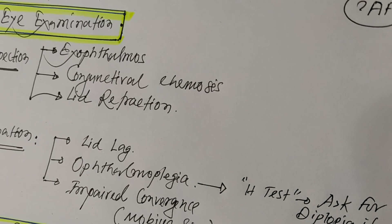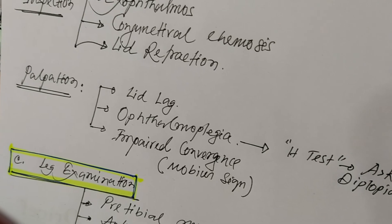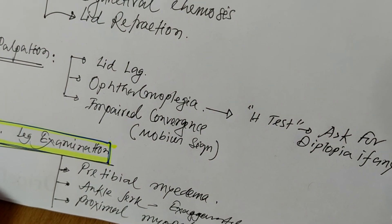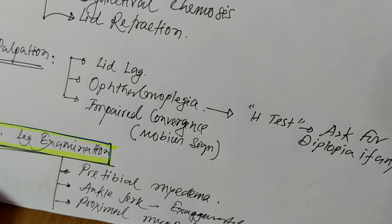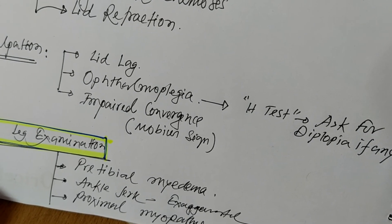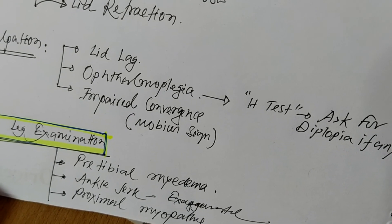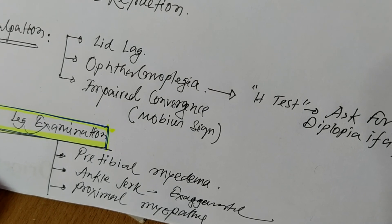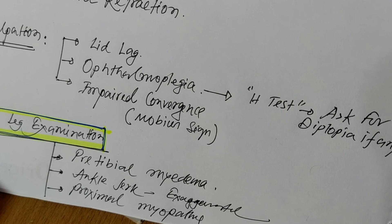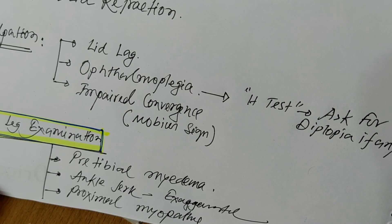The last point of thyroid function status examination is leg examination, which also has three points. First, pretibial myxedema — one of the most important pathognomonic signs for Graves' disease. Second, ankle reflex: in a thyrotoxic state, all deep tendon reflexes are exaggerated. Importantly, only the deep tendon reflexes are exaggerated, but not the plantar response, since the plantar response is not a deep tendon reflex.